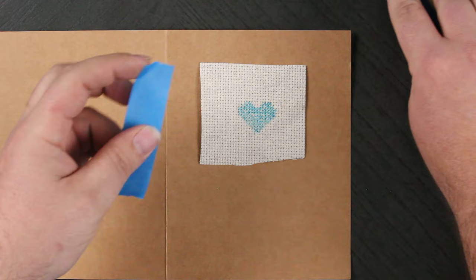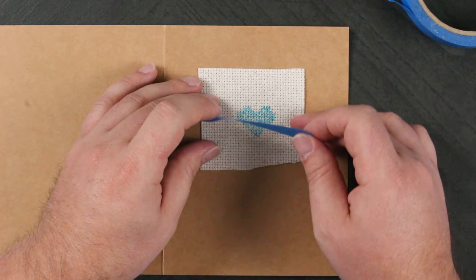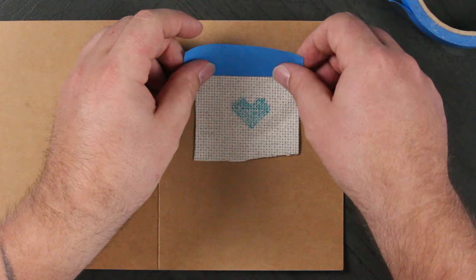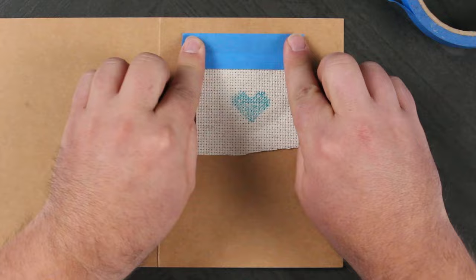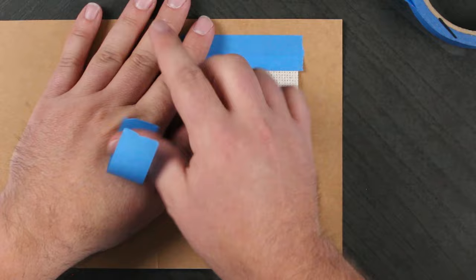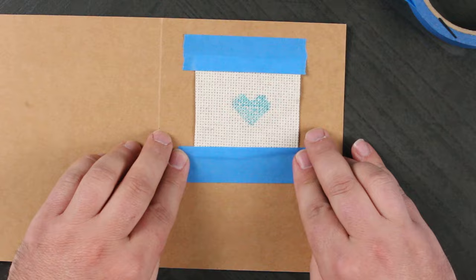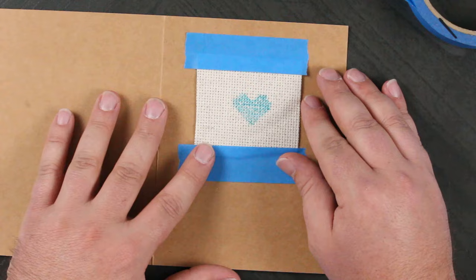Now you don't want it to be too sticky, so I recommend sticking the tape to yourself a few times to reduce its stickiness a little bit. Otherwise, it'll tear up the surface of the card when you peel it off later. So just decide where I want that. Tape that down. You can do either two or four sides, depending on how paranoid you are.